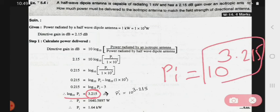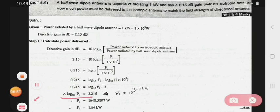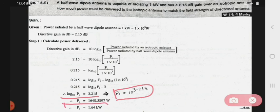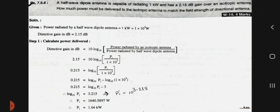In calculator you have to solve this, 10 raise to 3.215. The answer is 1640.5897 watt. So the answer is Pi equals 1.64 kilowatt. That is the power delivered. So in this way, we solve the numericals based on the antenna. Thank you.